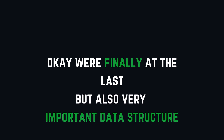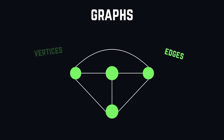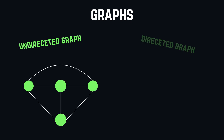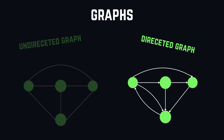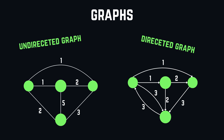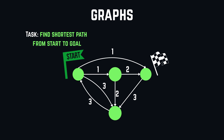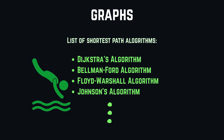We're finally at the last but also very important data structure: graphs. A graph contains vertices and edges — vertices are usually represented as circles, while edges are the lines that connect those circles. We generally distinguish between undirected and directed graphs. In an undirected graph, edges are just lines indicating that the connection between two vertices is mutual, so you can freely move back and forth. A directed graph uses arrows to show that direction is only one way. We can also put weights on edges, which can be interpreted as the cost to go from one vertex to another. One of the most famous applications is the shortest path problem, along with the many algorithms that come with it.